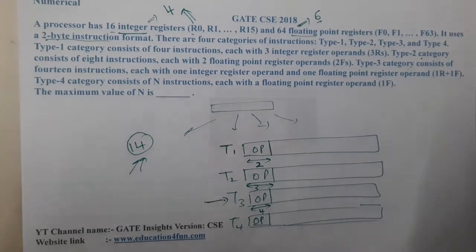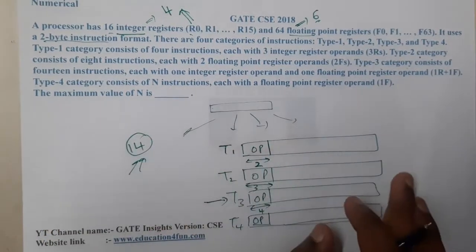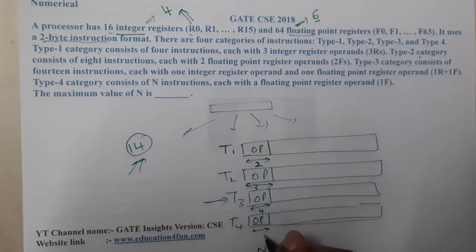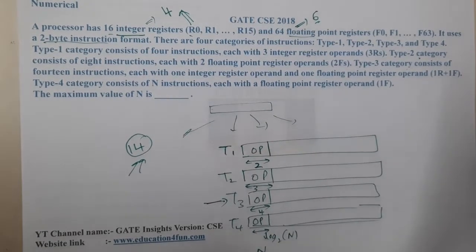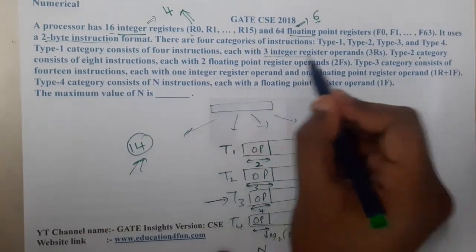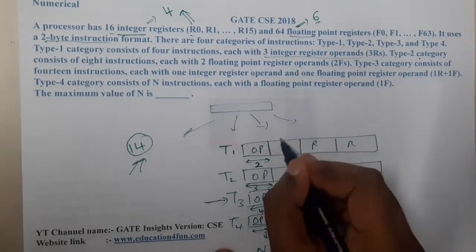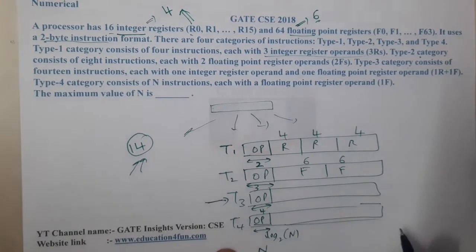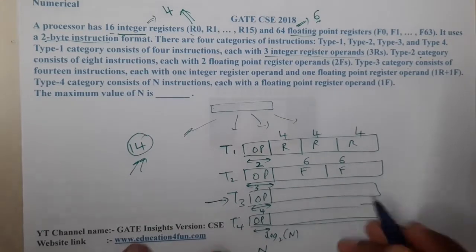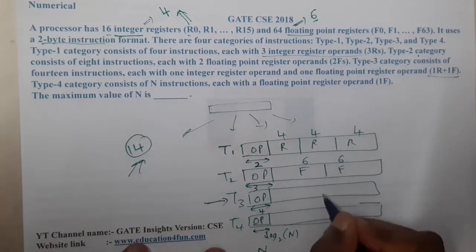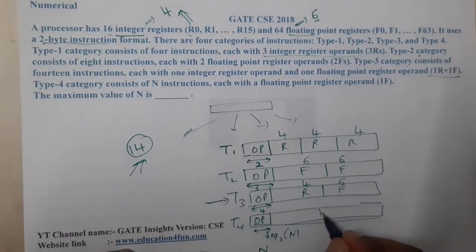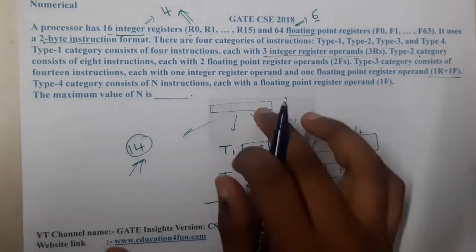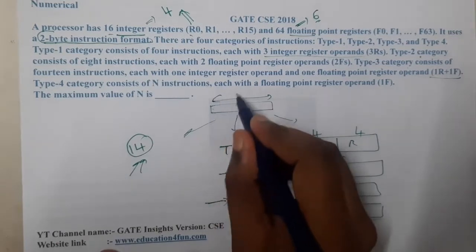For Type 4, the number of instructions is n, so the opcode bits will be log base 2 of n. The operand fields are: Type 1 has 3 integer registers at 4 bits each (3R), Type 2 has 2 floating point registers at 6 bits each (2F), Type 3 has 1 integer (4 bits) plus 1 float (6 bits), and Type 4 has 1 float at 6 bits. Since the instruction is 2-byte addressable, the total length is 16 bits.